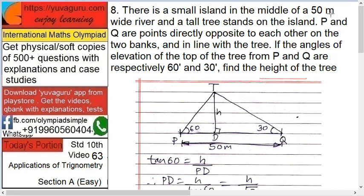Next, there is a small island in the middle of a 50 meter wide river. A tall tree stands on the island. P and Q are points directly opposite to each other on the two banks and in line with the tree. This means these are in the same line.